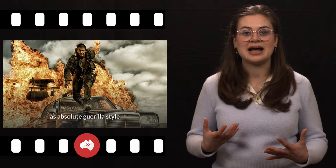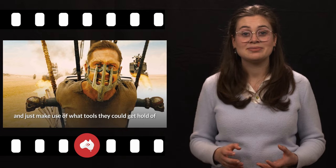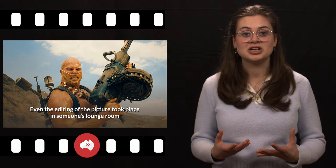Director George Miller has described making Mad Max as absolute guerrilla style, meaning they often had to do things with barely any money and just make use of what tools they could get hold of, often improvising along the way. Even the editing of the picture took place in someone's lounge room and kitchen rather than in a studio.